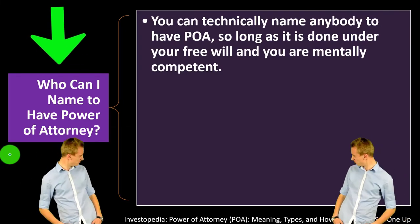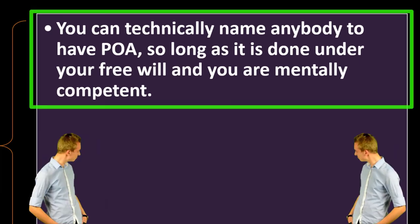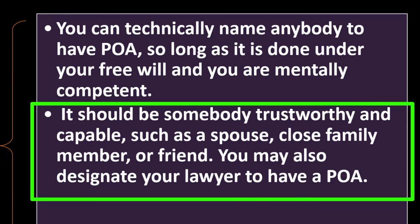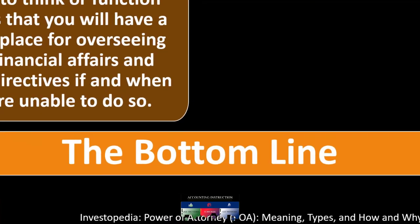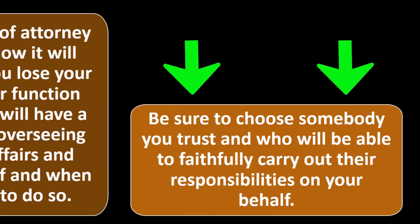The person granted power of attorney has a legal fiduciary duty to make decisions in the best interest of the person they represent. Next of kin or other family members have no legal authority to override or nullify an existing POA. A power of attorney can be terminated if you expressly revoke it, if it reaches a set termination date, if you become mentally incapacitated (unless it is durable), or if you die — at which point all powers of attorney cease. You can name anyone trustworthy and capable as your agent, but naming more than one individual is not recommended as it can create conflicts and confusion.